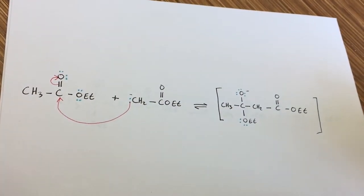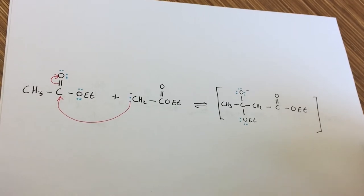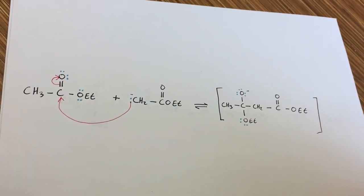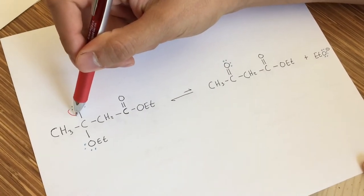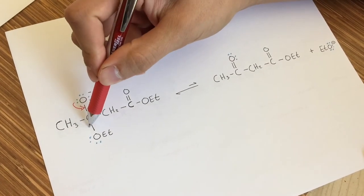This intermediate has an ethoxy leaving group. In this next step, the lone pair of the oxygen forms a double bond with the carbon, which kicks off the ethoxide leaving group.